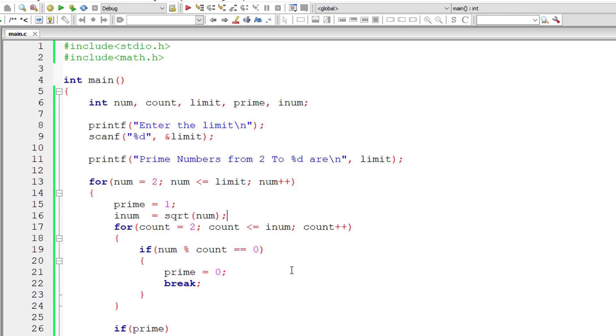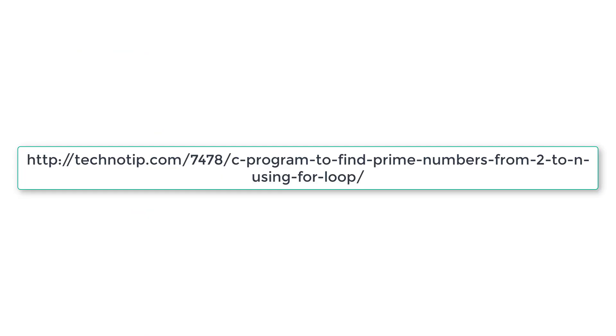So this is the code to fetch all the prime numbers between 2 to a user-entered number. Please visit the link in the description for source code, notes, and discussion about this topic. Stay subscribed to our YouTube channel and blog, share this video with your friends, and please like this video on YouTube.